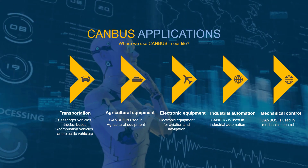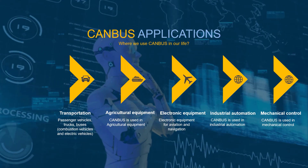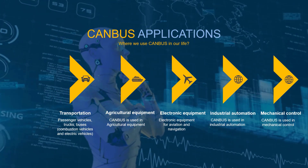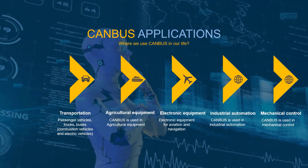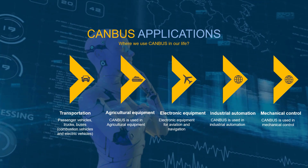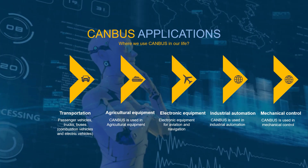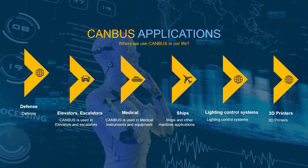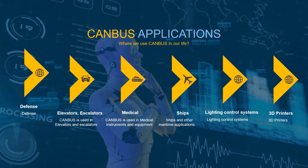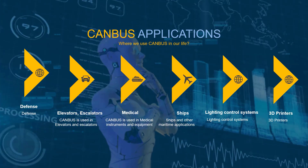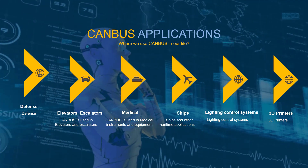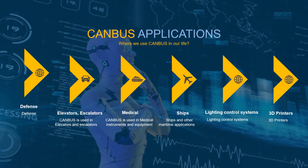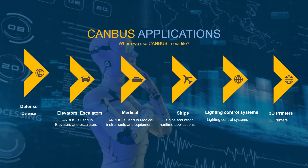CAN bus is used across many industries. It is used in passenger vehicles, trucks, and buses, as well as agricultural equipment, aviation and navigation electronics, and industrial automation and mechanical control. CAN bus is also used in the defense sector, elevators and escalators, building automation, medical instruments and equipment, ships, 3D printers, and lighting control systems.